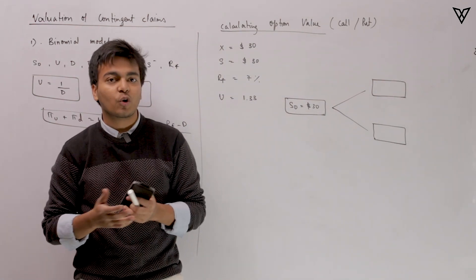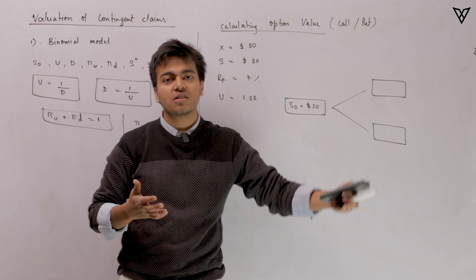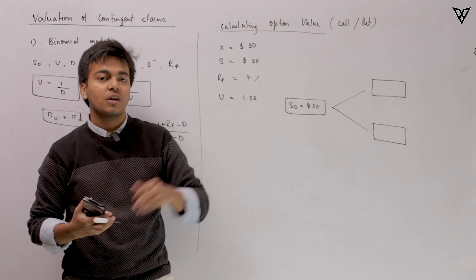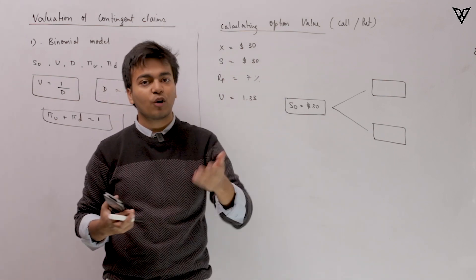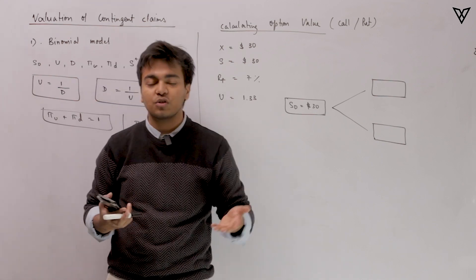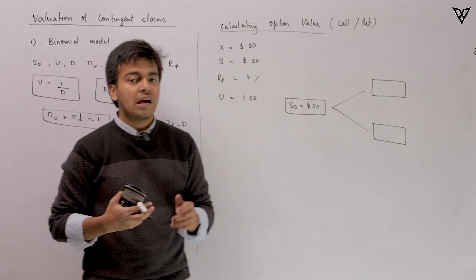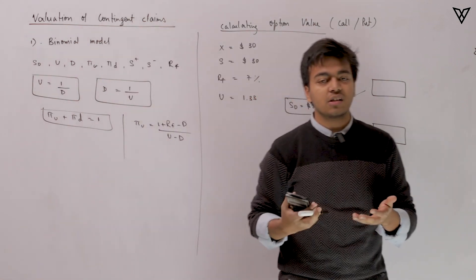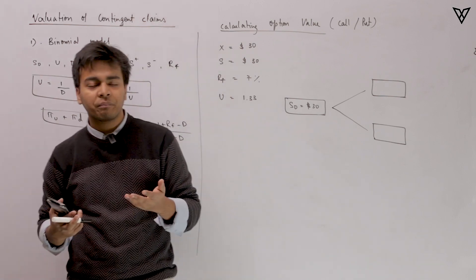Here we'll be talking about options first, because options in themselves are based on some contingent events — that is, if the stock price touches the exercise price, then and only then the payoff would be there for either the long party or the short party. The first model we are going to use to value these contingent claims is the binomial model.